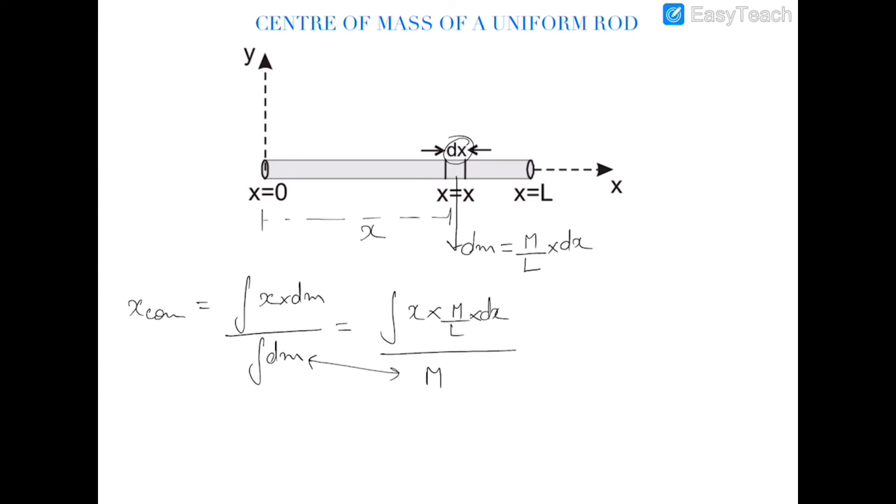So canceling this m with m, and this is 1 by l into x square by 2. The integration of x dx is x square by 2, and I have applied the limit from 0 to l.